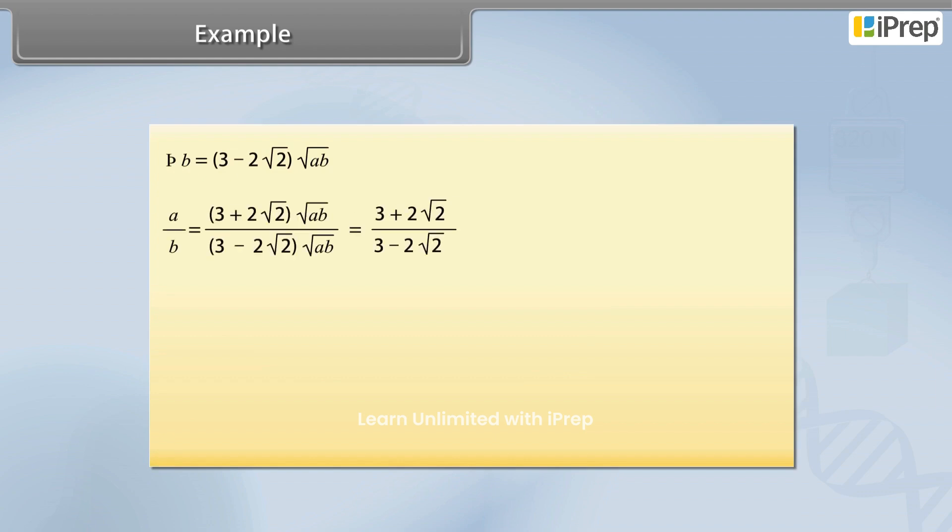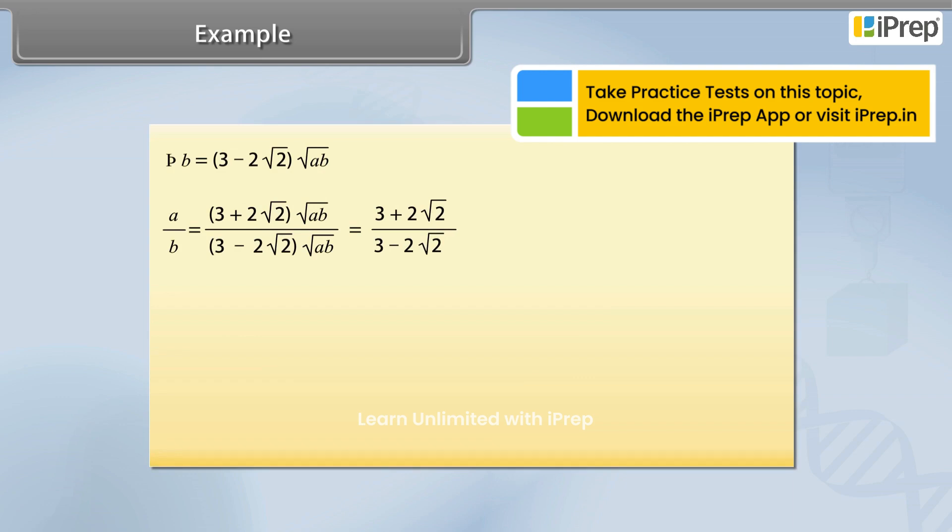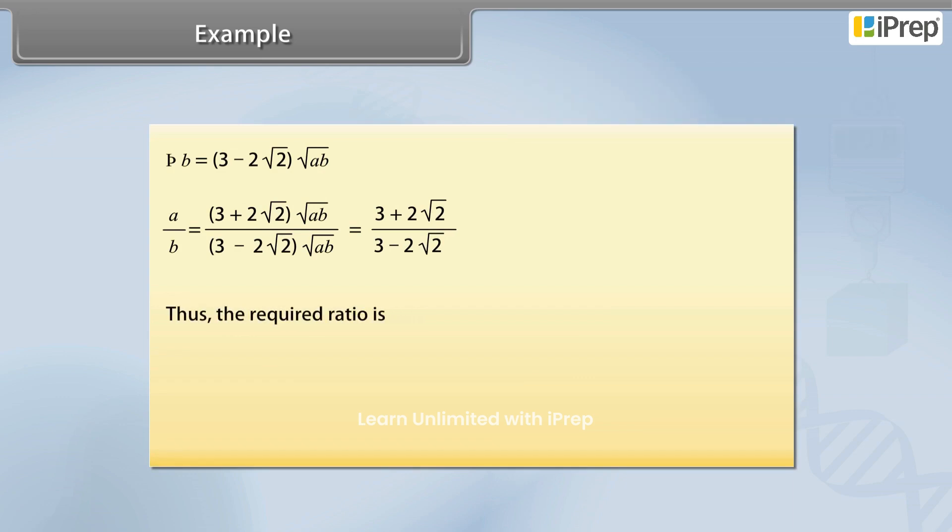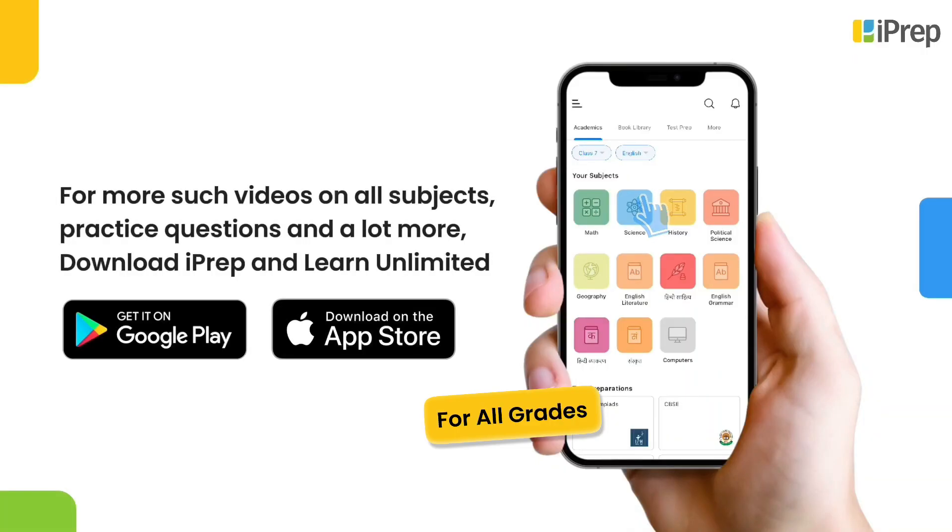a divided by b equals (3 plus 2 root 2) divided by (3 minus 2 root 2). Thus, the required ratio is determined.